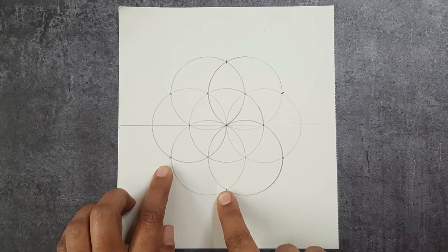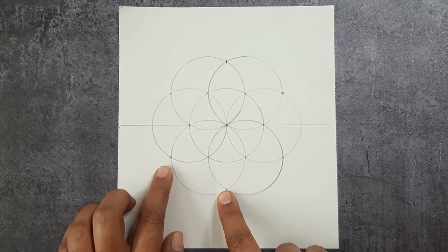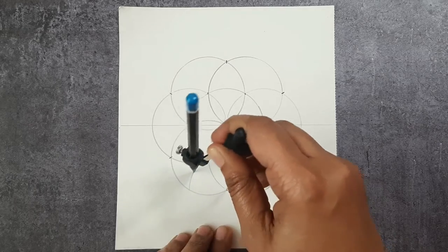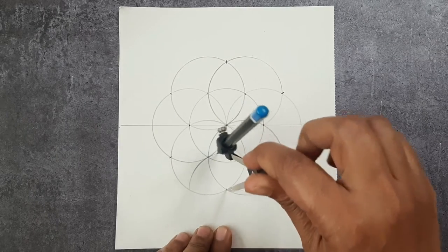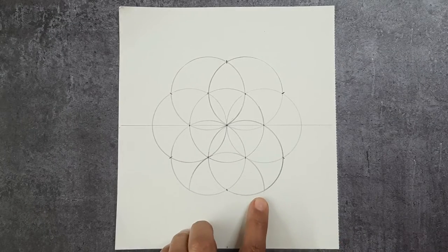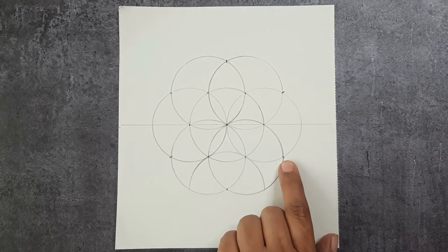But this time not full circle but only half. Let me do that now. Half circle. Now the second half circle from here.